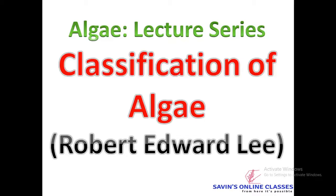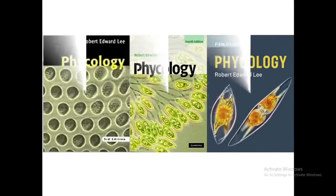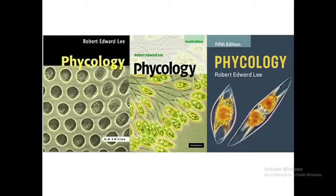Welcome back friends in one more video of the Algae lecture series. In this video we will discuss the classification of algae as proposed by Robert Edward Lee. Lee divided the entire algae into four groups on the basis of presence or absence of chloroplast as well as chloroplast endoplasmic reticulum membrane.